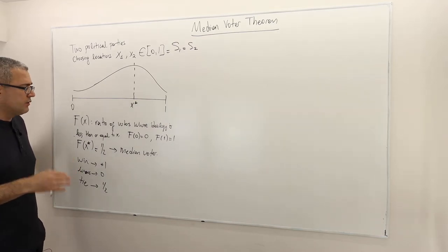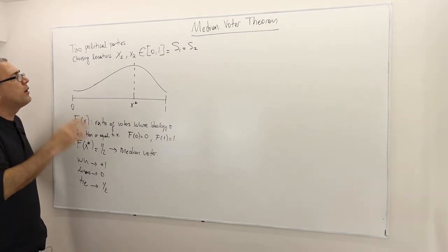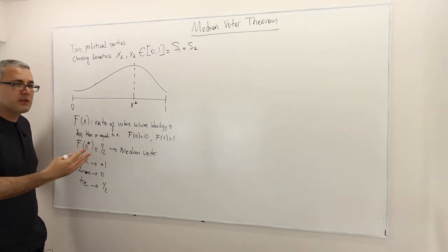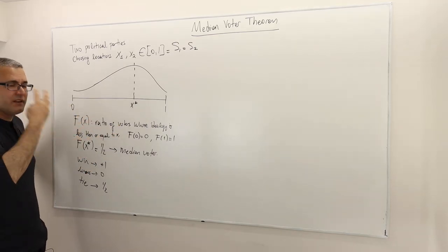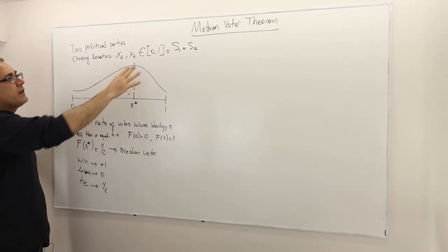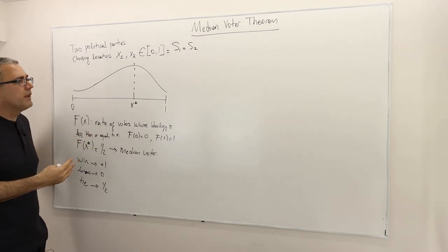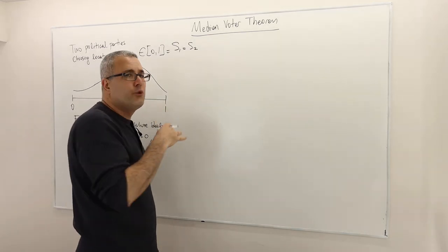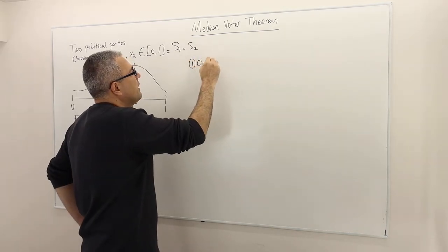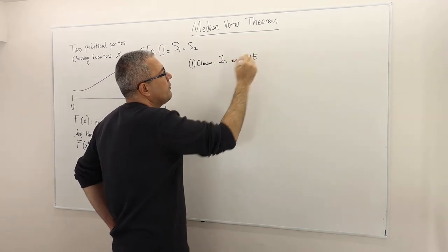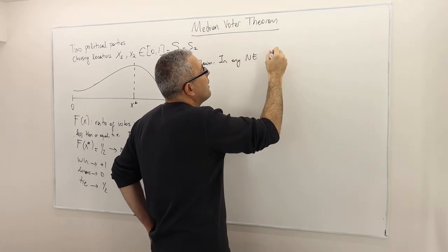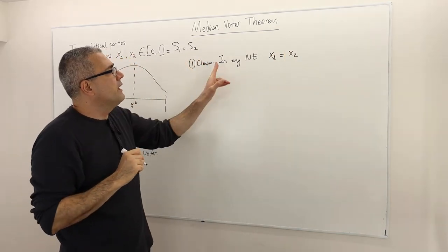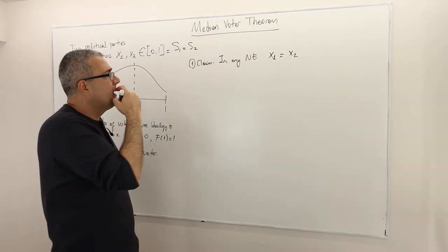In this game, the question is: what is the Nash equilibrium? What location are these parties going to select? This game is very similar to the location game we analyzed earlier, though here there are infinitely many strategies. The first claim is that in any Nash equilibrium — there might be more than one — if x1 is the location choice of party 1 and x2 the location choice of party 2, then x1 must equal x2.